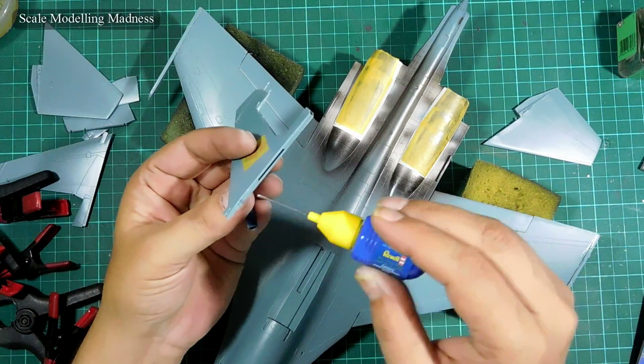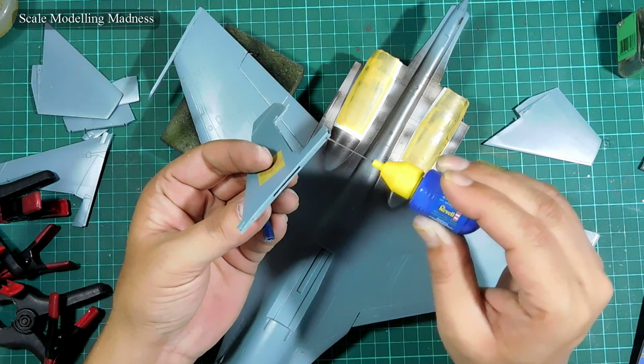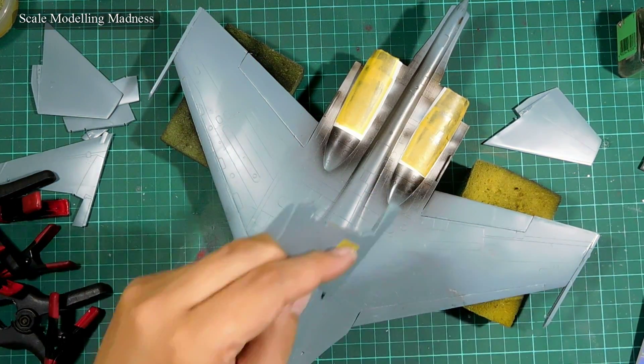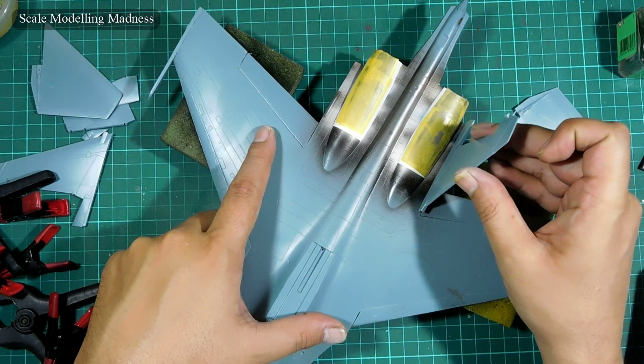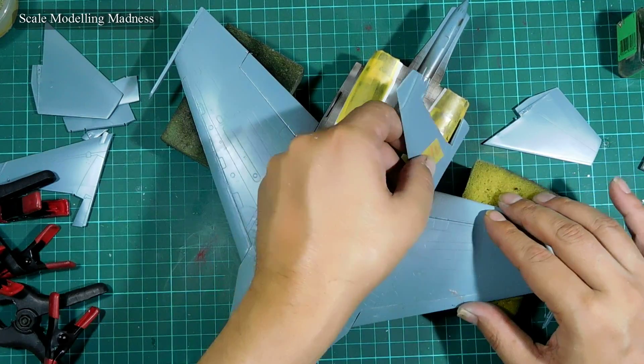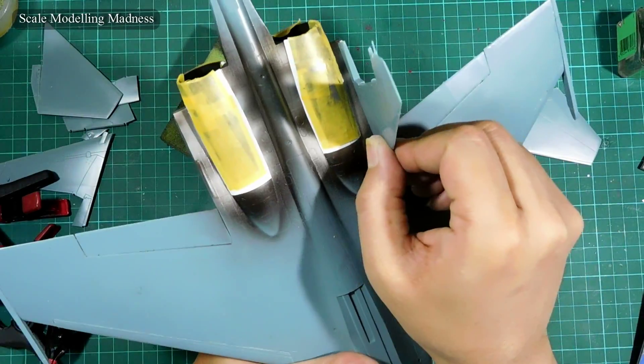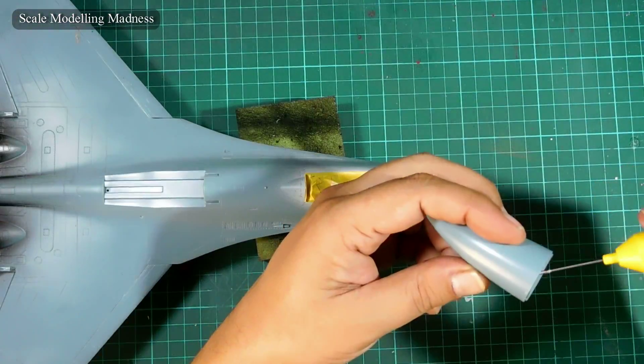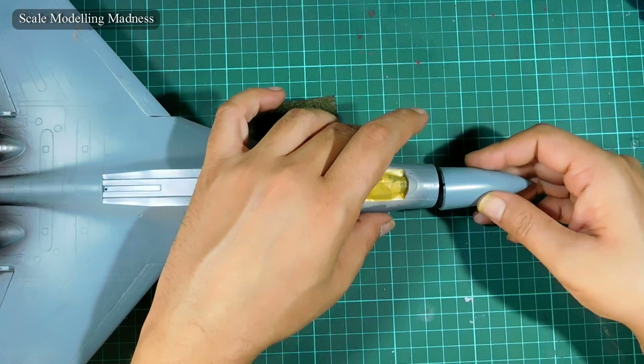I then masked all the parts I had painted and the cockpit. And added all the other big pieces of the kit, like these stabilizers. The nose cone gets glued in now.